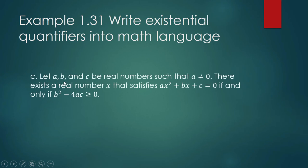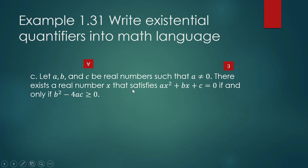Another example: Let a, b, and c be real numbers such that a is not equal to zero. There exists a real number x that satisfies the equation ax² + bx + c = 0 if and only if b² − 4ac is greater than or equal to zero. Here, a, b, and c can be any real number with a ≠ 0, so that is a universal quantifier. 'There exists a real number x' is an existential quantifier. 'If and only if' is a biconditional connective, so we will use that symbol.